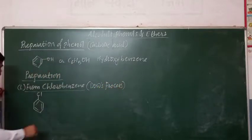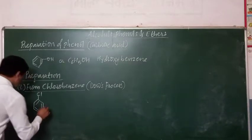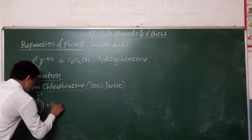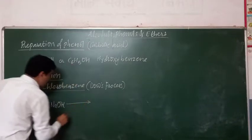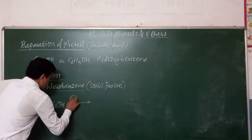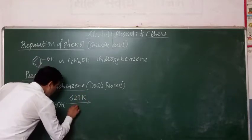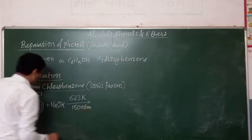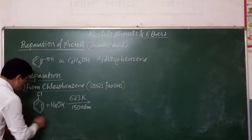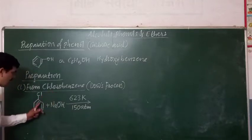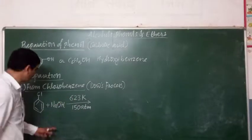Dow's process for the preparation of phenol. In this method, chlorobenzene is reacted with NaOH — sodium hydroxide. The reaction is carried out at a high temperature of 623 Kelvin under a pressure of 150 atmospheres. High pressure is applied to this reaction mixture of chlorobenzene and sodium hydroxide.